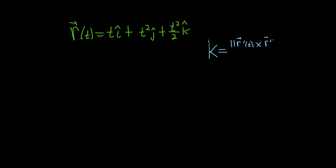It's an r double prime of t. So that's the numerator. And the denominator is the magnitude of r prime, and it's cubed. Again, this only works for space curves. So you have to have your i, j, and k in order to use this formula.